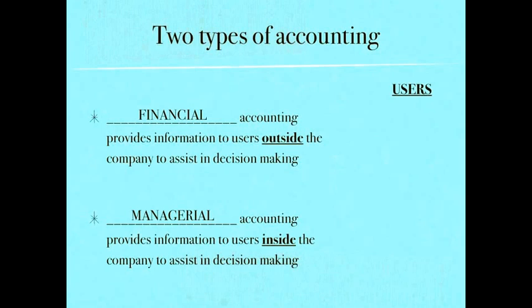Now we'll talk about users of these specific types of accounting information. The first one — financial accounting information — users of this type would be creditors: people lending you or a company money. They would need to know how financially secure you are for them to be able to lend you money.